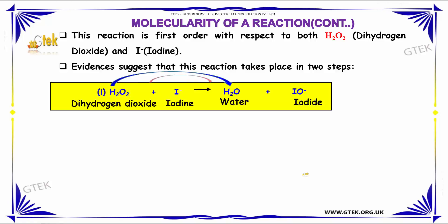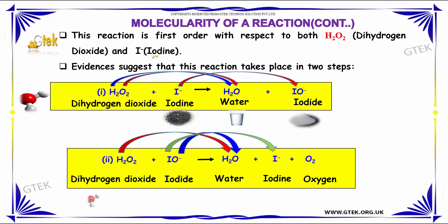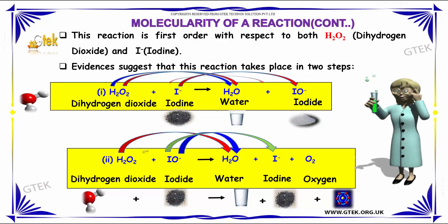This reaction is first order with respect to both H2O2 and iodine. The evidence suggests that this reaction is taking place in two steps. Hydrogen peroxide with iodine gives water and iodide ion. And hydrogen peroxide with iodide ion will give water, iodine ion and oxygen. This is a two step process.